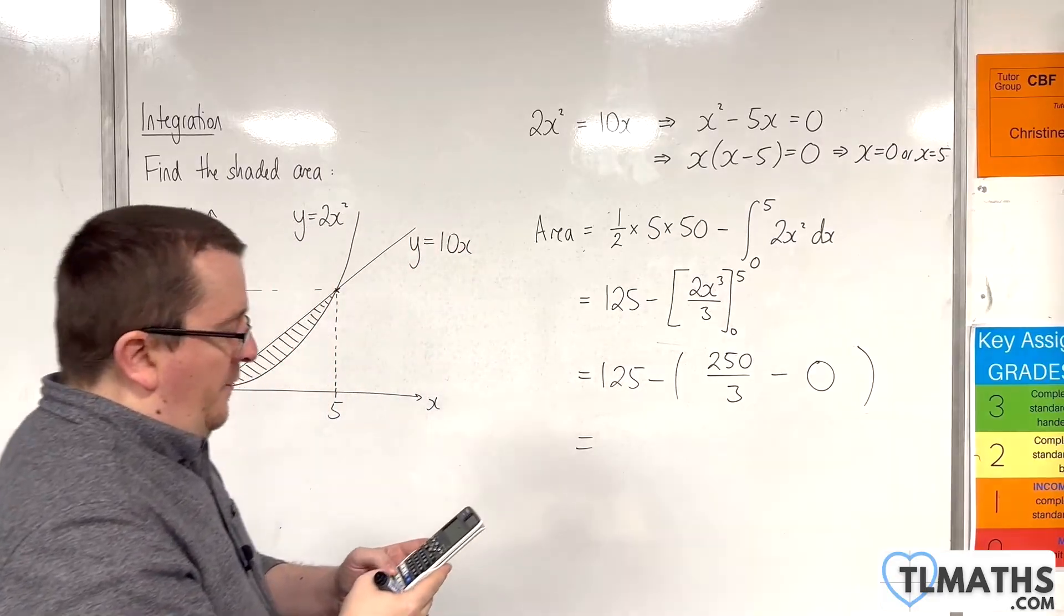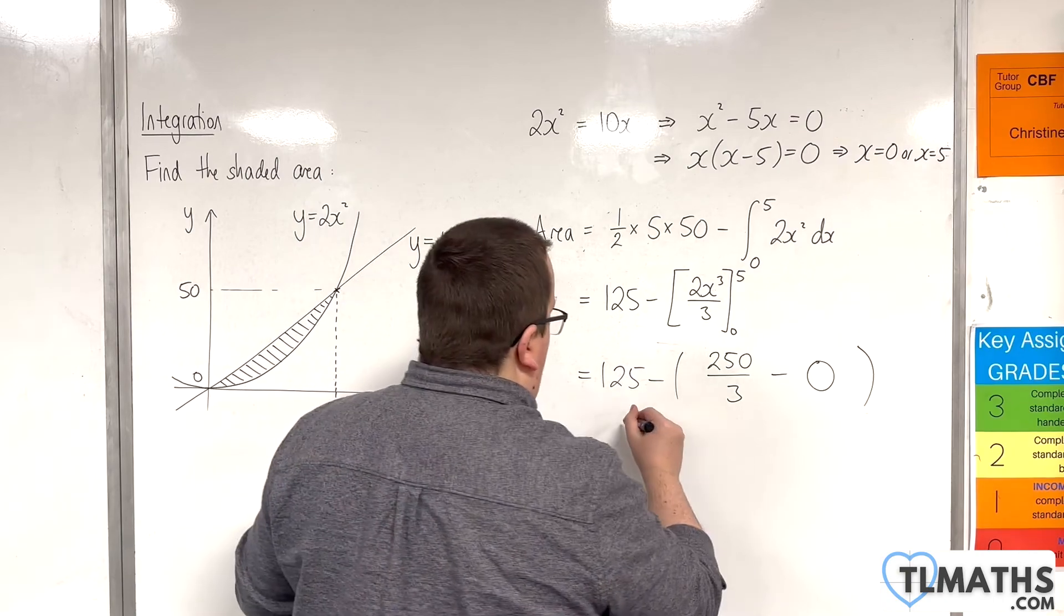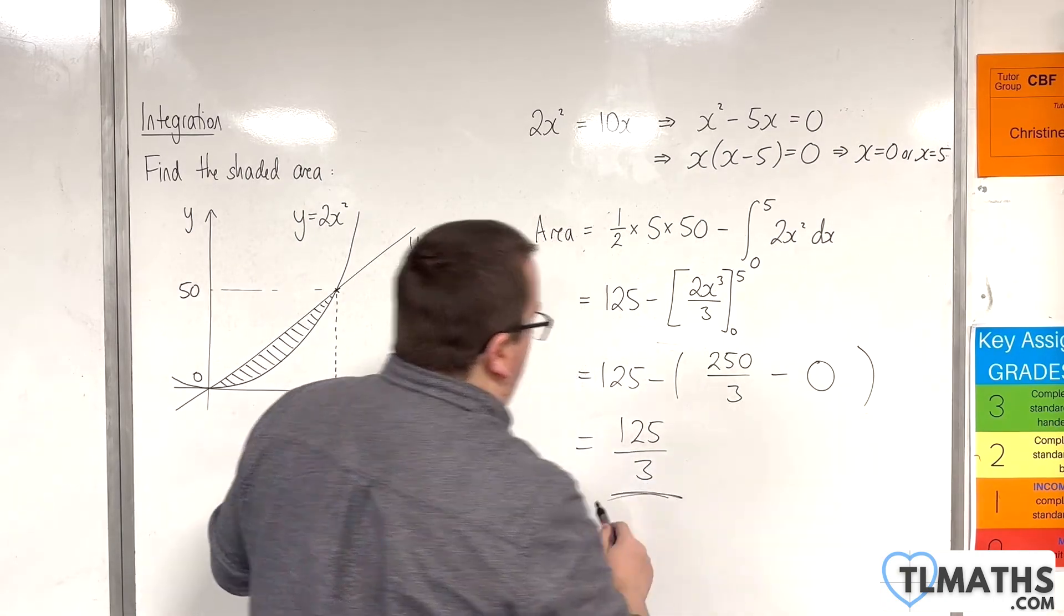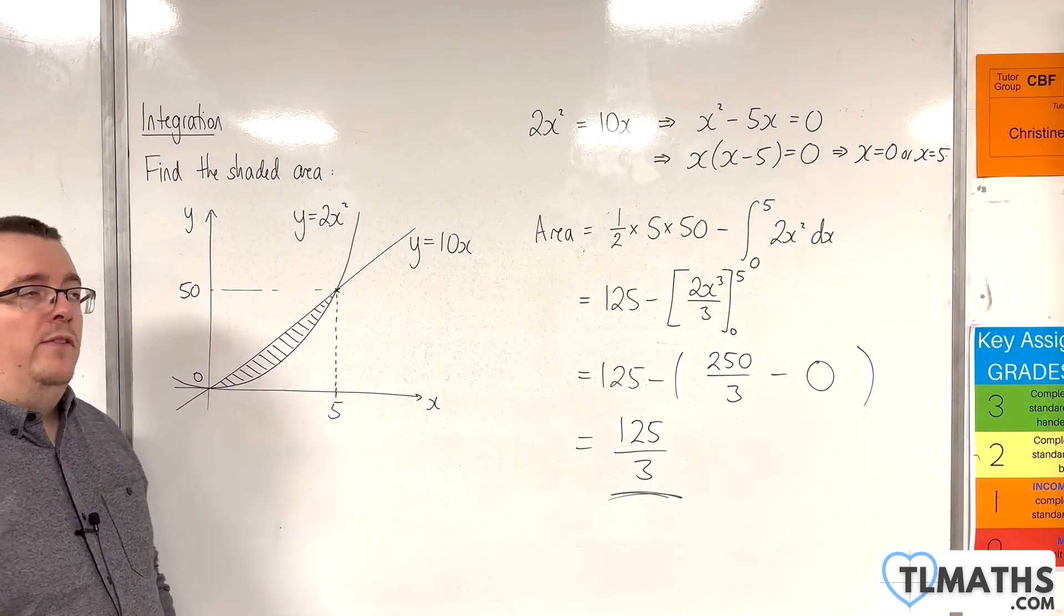So we have 125 take away 250 over 3. And that is itself 125 over 3. Okay, so that is the exact shaded area that we needed.